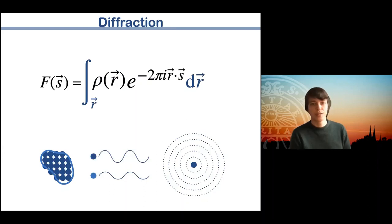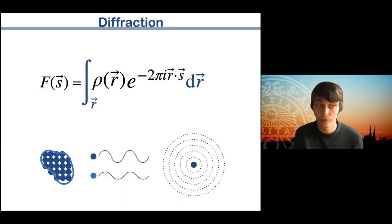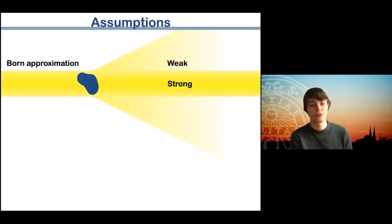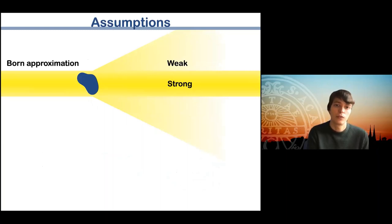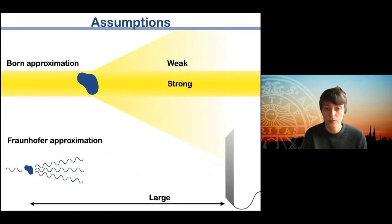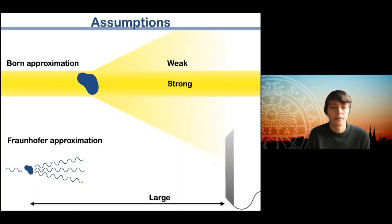This is a simplification. The two most important approximations are the Born approximation — which says the diffraction is weak and we can neglect interaction between already-scattered light and the sample — and the Fraunhofer approximation, which states that the distance from the sample to the detector is large compared to the size of the sample and the wavelength.